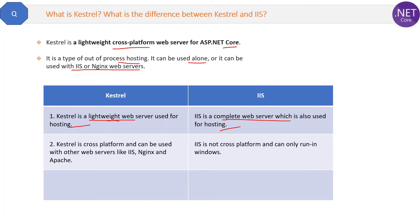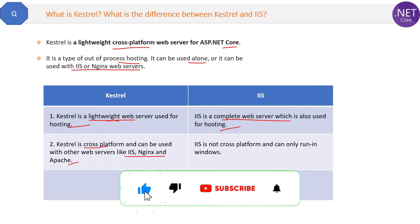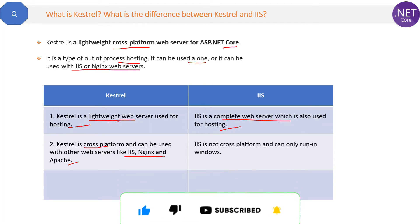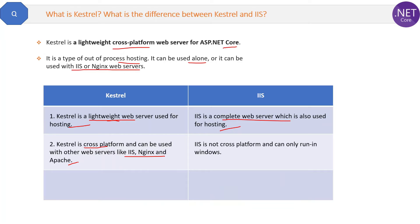The second difference is Kestrel is cross-platform and can be used with other web servers like IIS, Nginx, and Apache. That's why .NET Core applications can work on Windows, Linux, and any other operating system. Whereas IIS is not cross-platform and can only run on Windows — that is the limitation of IIS.